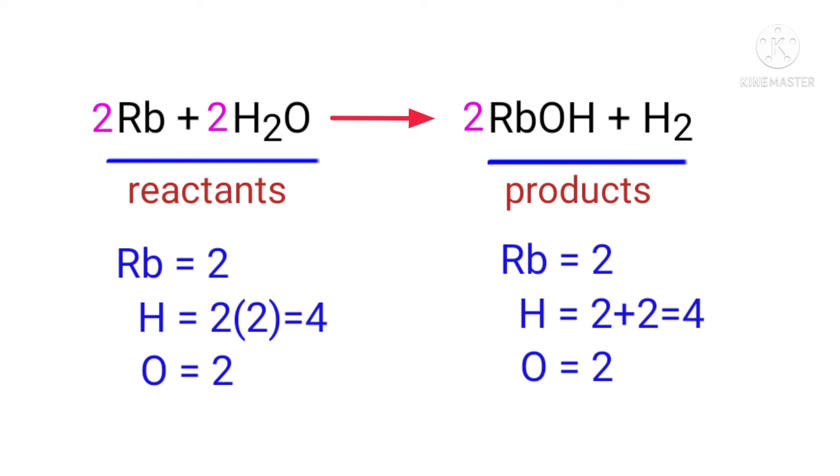The equation is now balanced. There are two rubidium atoms, four hydrogen atoms, and two oxygen atoms on both sides.